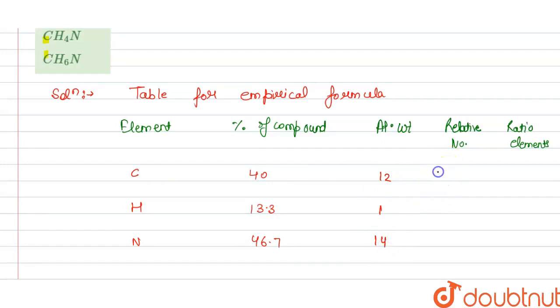And this is the relative number, so this is 40 divided by 12, that is 3.33, and this is 13.3 divided by 1, that is 13.3, and this is 46.7 divided by 14, that is 3.33.